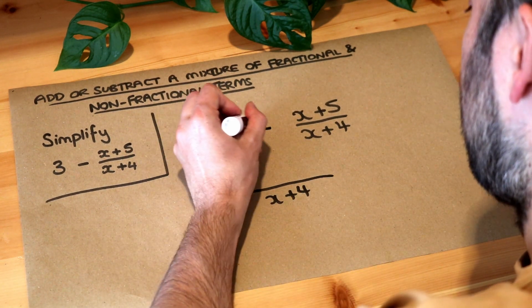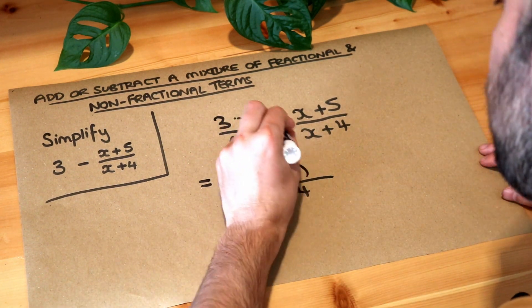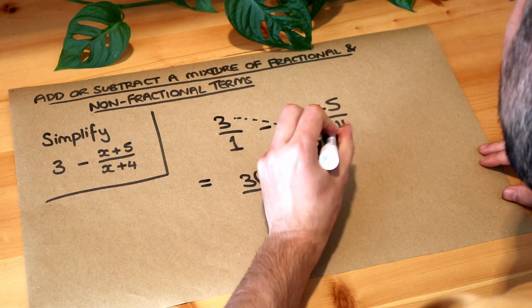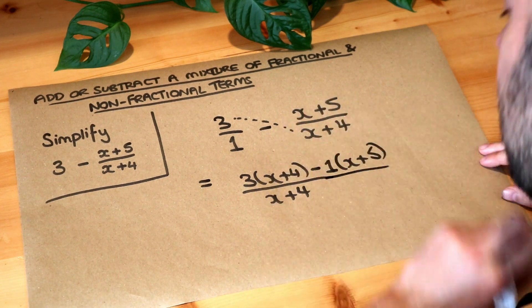So the three gets multiplied by the x plus four, I'm going to write that. And then you've got minus, and then the one gets multiplied by the x plus five. So we have something like this.